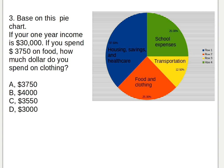Let's get to the third question. Based on this pie chart, if your one-year income is thirty thousand dollars and you spend three thousand seven hundred and fifty dollars on food, how much do you spend on clothing? Let's work through that.